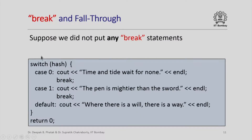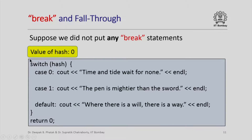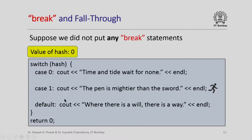What are those break statements in the switch case? What would happen if we did not put any break statements? Here was our switch case statement with two breaks — let us delete those breaks. If the value of hash is 0, the computer executes the statement for case 0 and prints the first message. In the absence of the break statement it will fall through to the next executable statement even if it corresponds to a different case. It then falls through to the default, so it will print all three messages and then execute return 0.